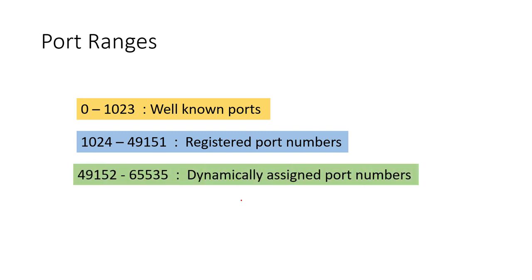And we have dynamically assigned ports. The dynamically assigned port is what we just saw — when you are sending requests using your browser, that browser application is assigned a specific dynamic port. We use this dynamically assigned port to send the request, and when the server responds, it uses that same port to respond back to us.